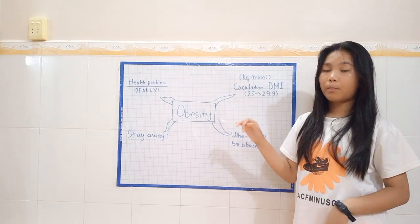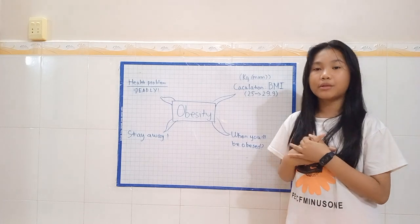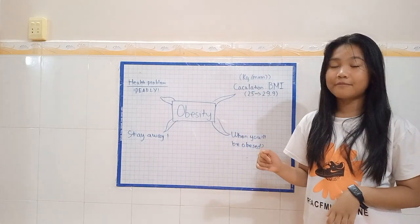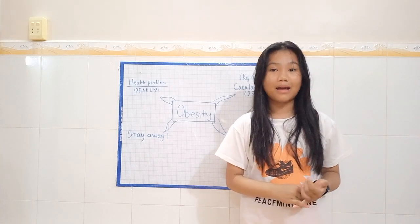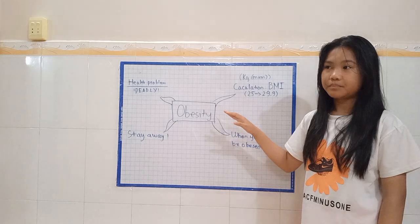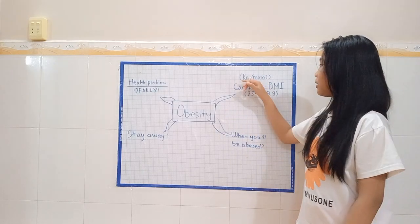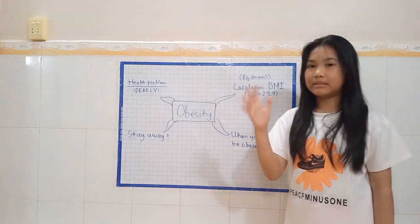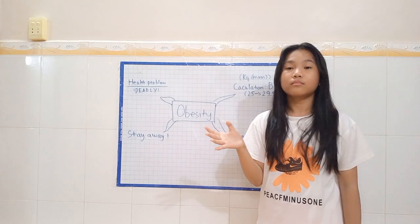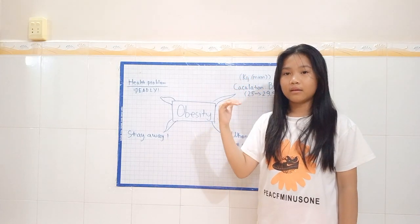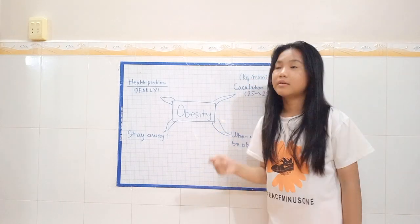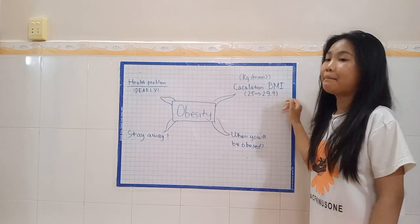You could easily find out if your BMI is good or bad by using your weight in kilograms and your height in meters. You divide your weight by your height squared to find out your BMI number,